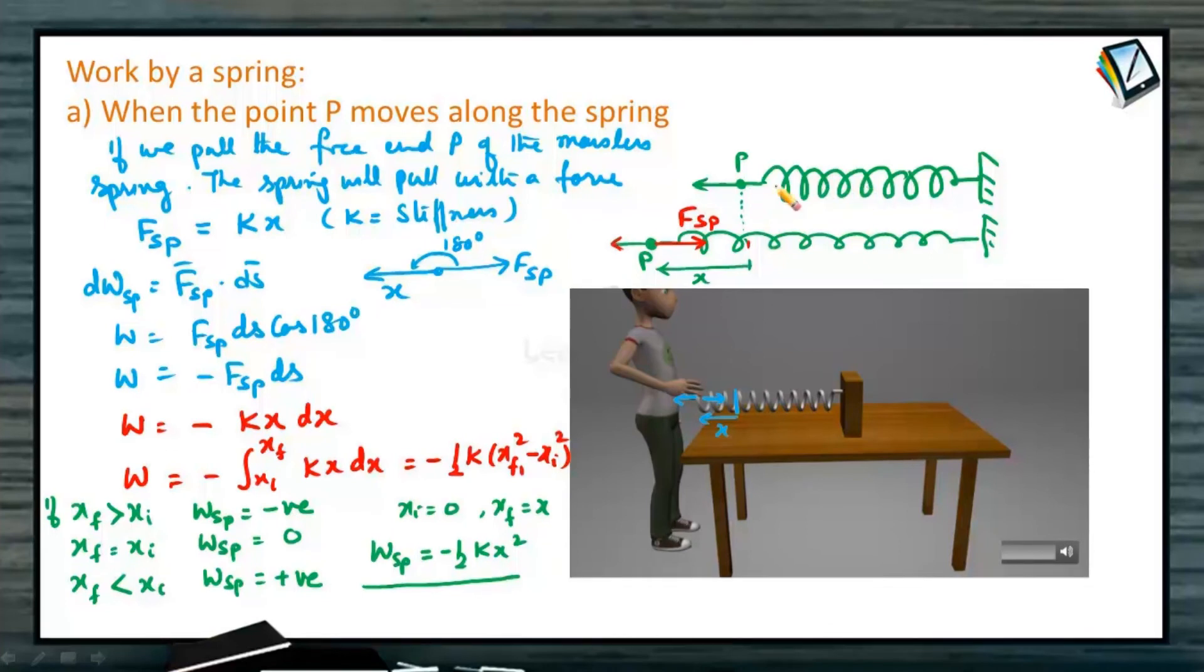From its undeformed length, either you pull the spring in this direction or you push so that it compresses. Compressed or elongated, in whichever condition it may be, from its relaxed length if you take it, always the work done will be negative and that will be half of k x square.